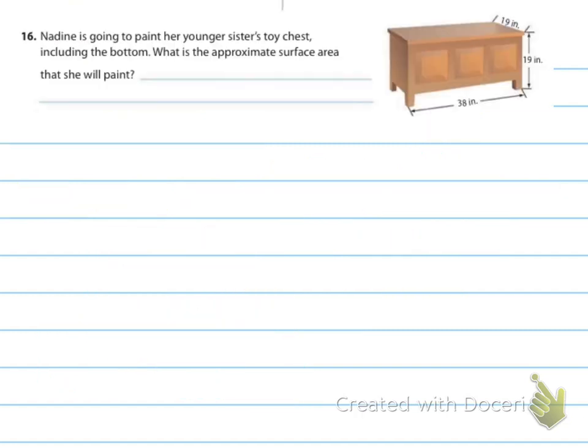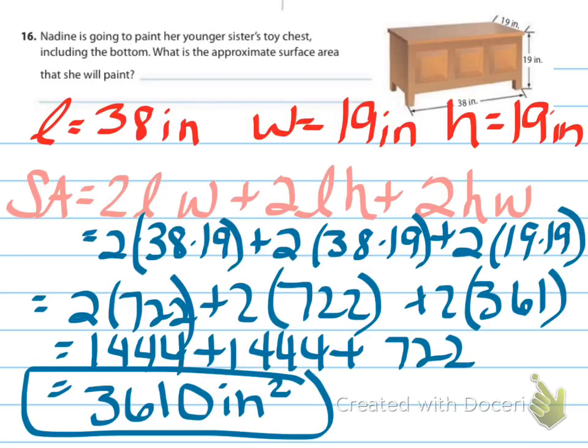Alright, so this time Nadine is going to paint her younger sister's toy chest, including the bottom. What is the approximate surface area that she will paint? I would go with identifying length, width, and height and using the formula. Go ahead and pause the video and figure out how you'd like to do it — the bottom line is we should both get the same answer. The area of this toy chest is 3,610 inches squared. It says to include the bottom, so we're good — otherwise it would be a bit less work.